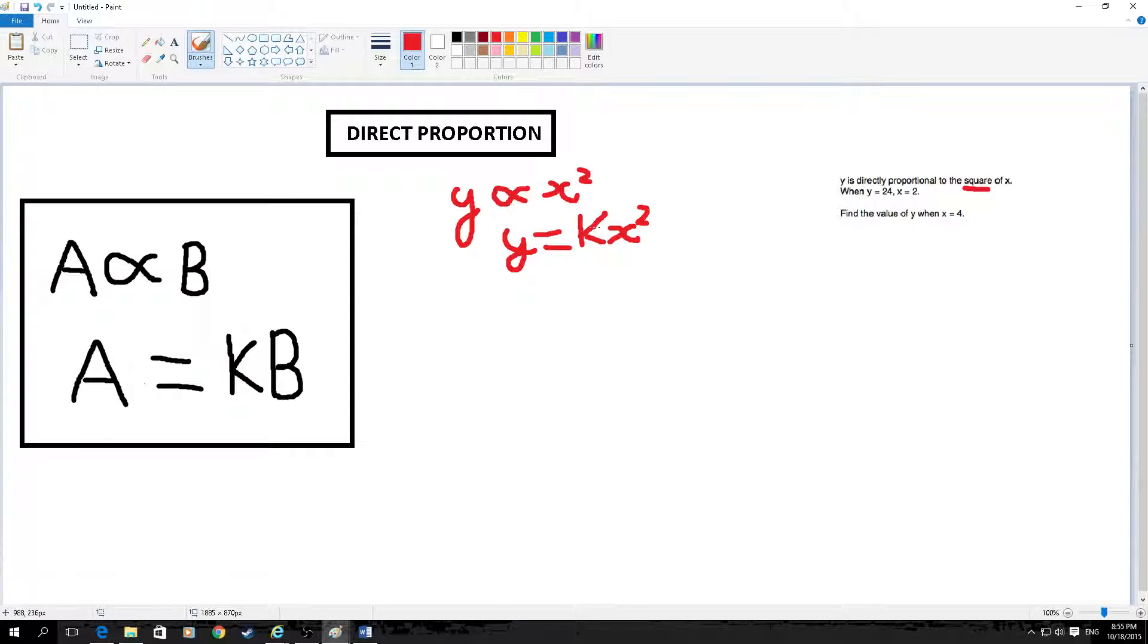Put an equal sign, just put k in. So when y is 24, 24 equals k times 4.